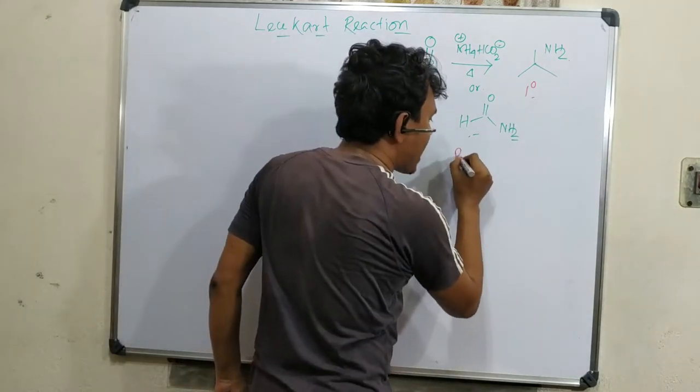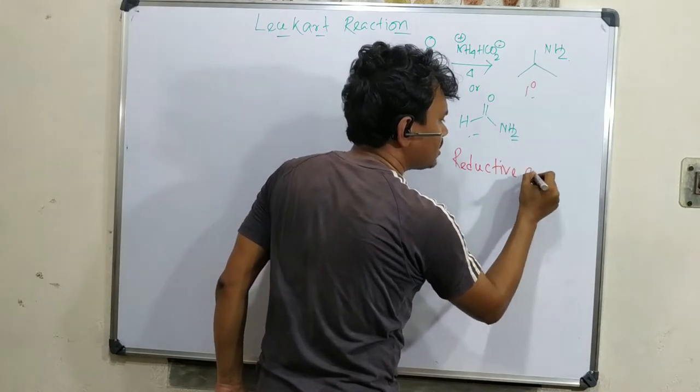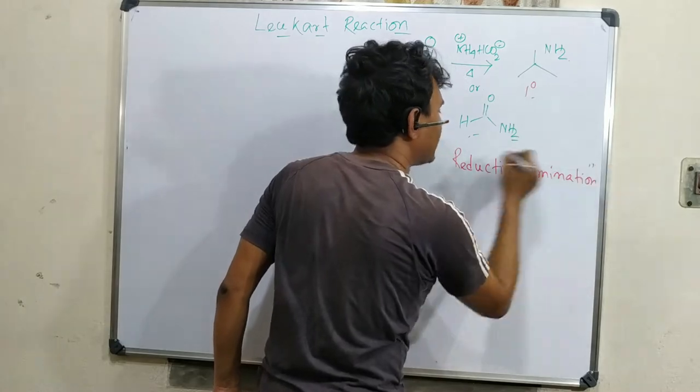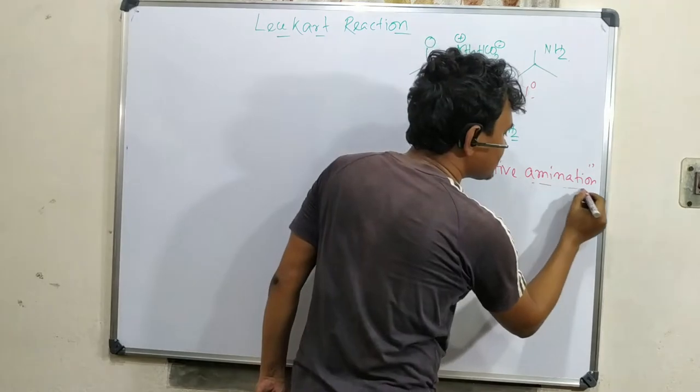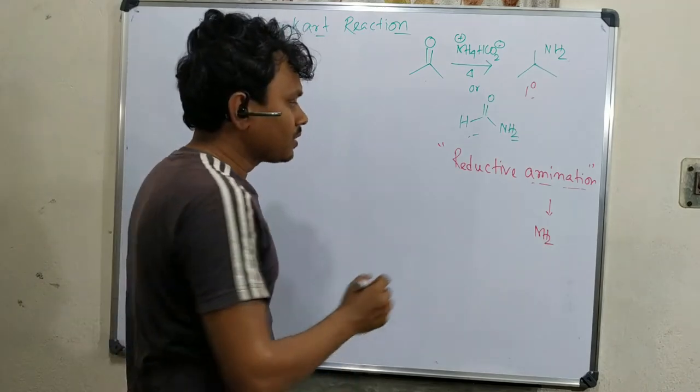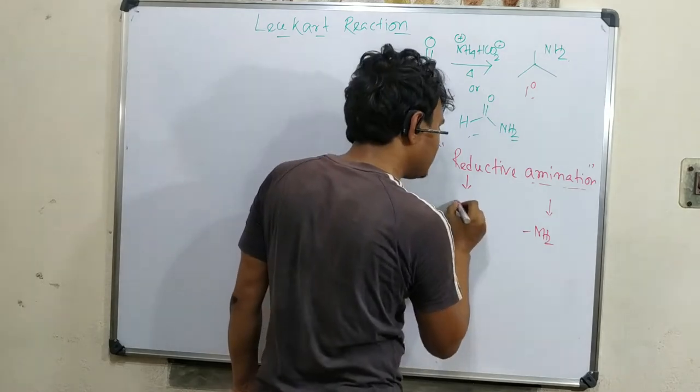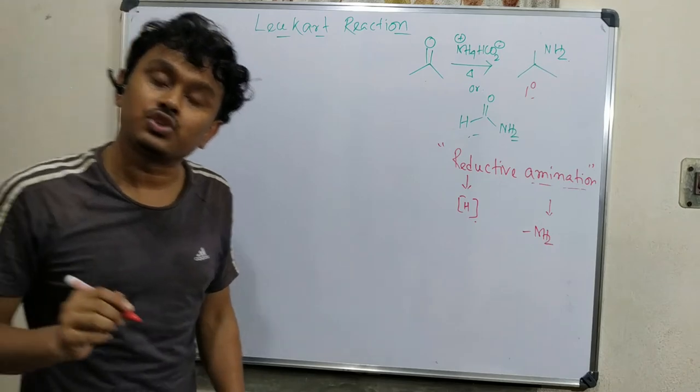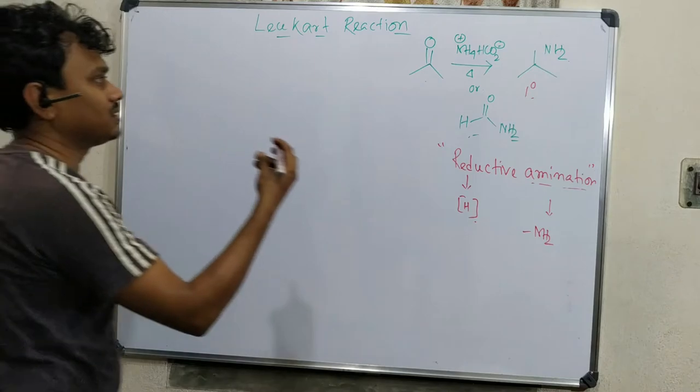Reductive amination - please keep this term in mind. From amination you can say that this means NH2 group introduction, addition of NH2. Reductive means this addition is associated with reduction. During this process two things we will observe: one is amine incorporation, second is reduction.